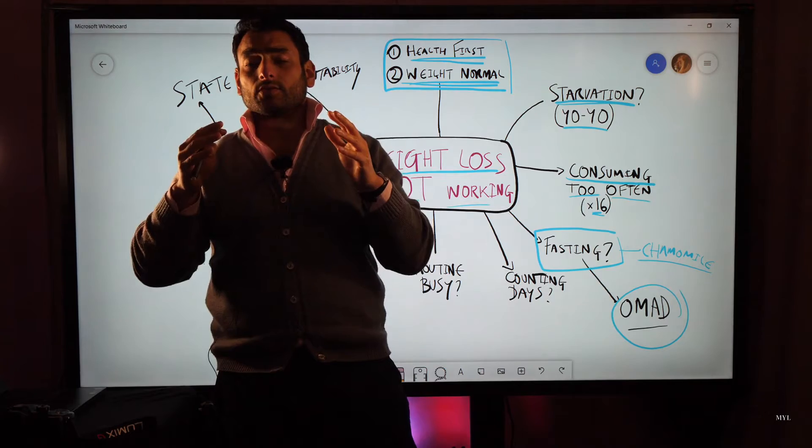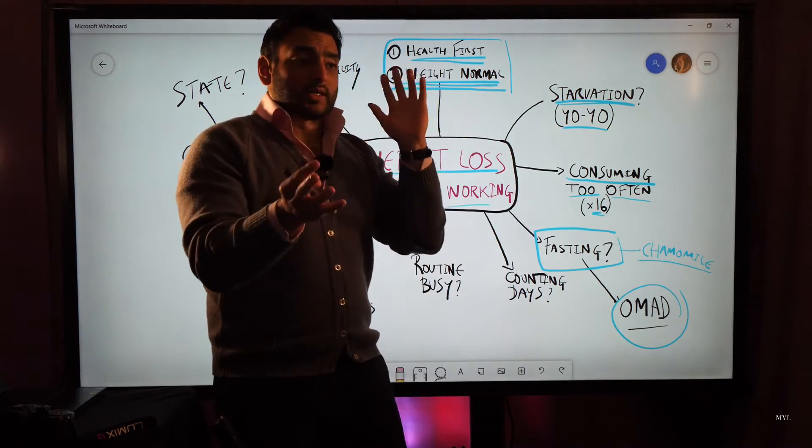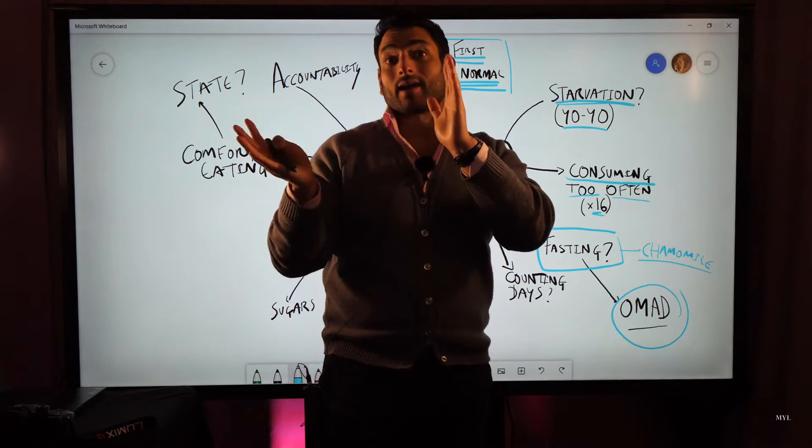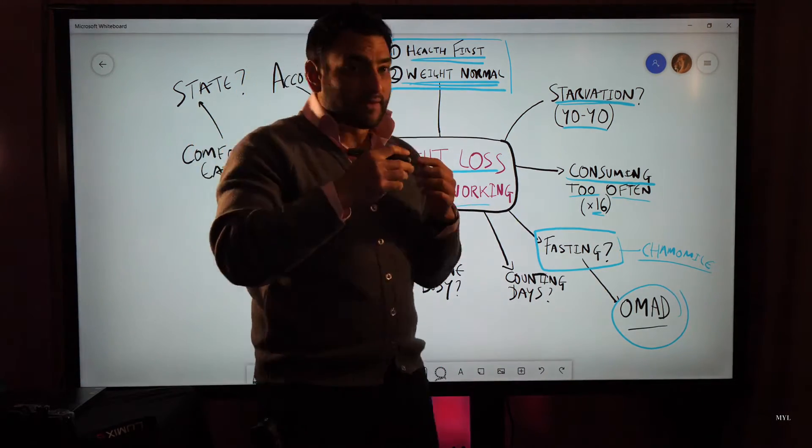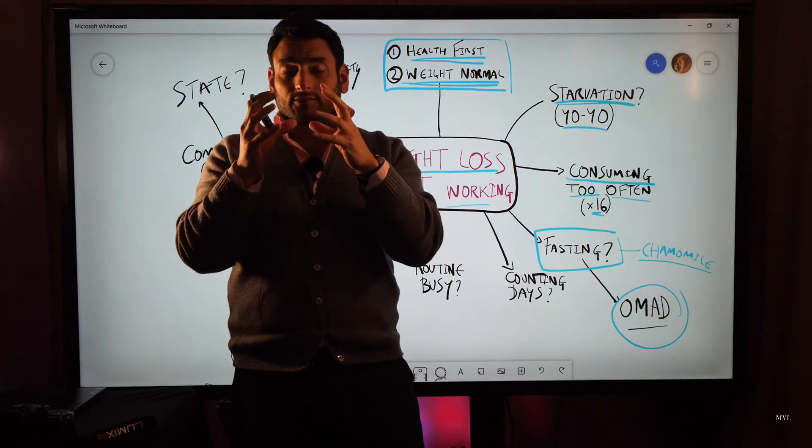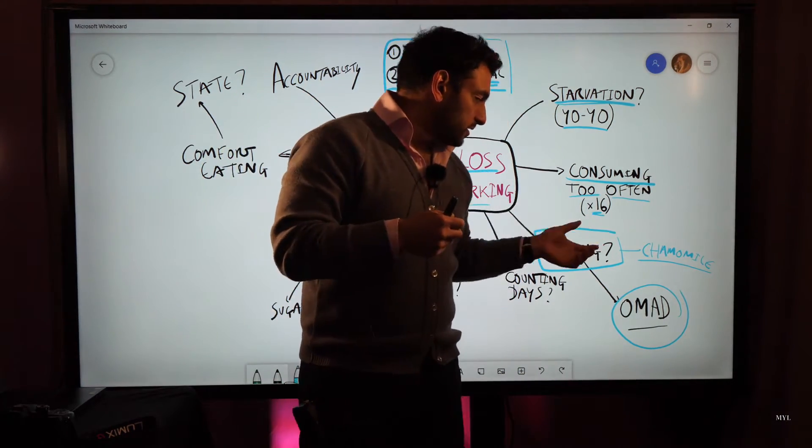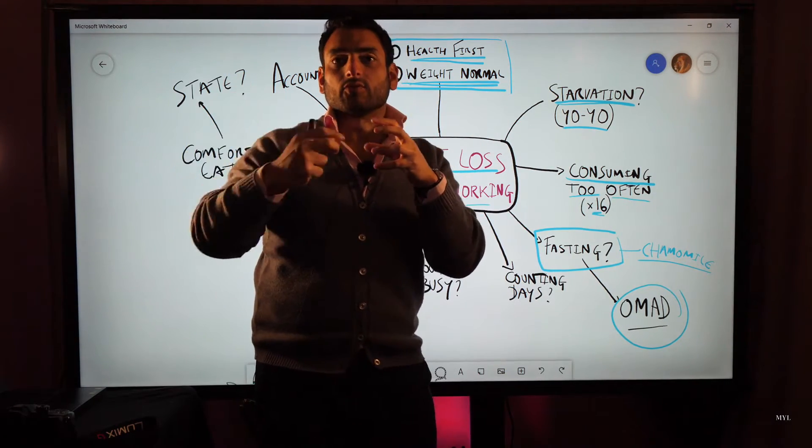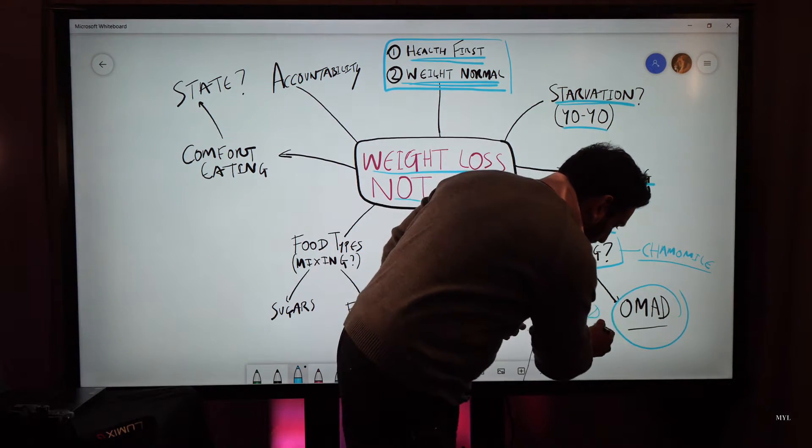What I would suggest is eat whatever you're eating but eat it in a smaller window. Start by doing that and I think that in itself will start to create some change. Then eventually, when you have control over the regularity and the intervals that you eat, you can start to slowly merge in healthier foods. Or first remove the stuff that's not serving you. The first thing I recommend to remove is all dairy and wheat.